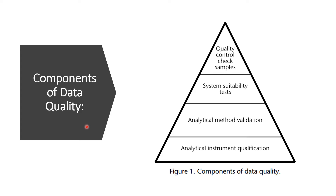Now in this slide, we will discuss the components of data quality. In USP Chapter 1058, it is mentioned how the components of data quality should be structured, which you can understand easily with this pyramid. First, you will procure the instrument and perform the qualification activity to ensure the system performance is satisfactory and the system is fit for the intended use. Use of a qualified instrument in analysis contributes to confidence that the validity of generated data is of high quality.